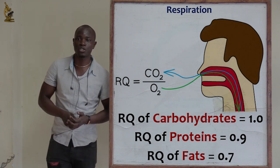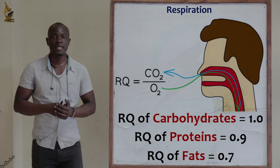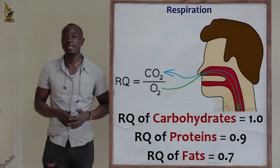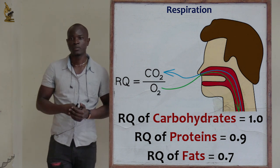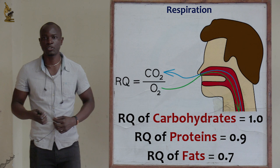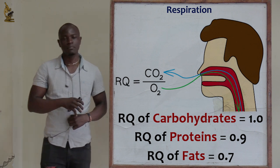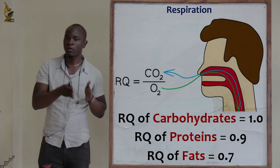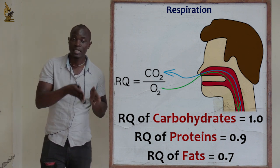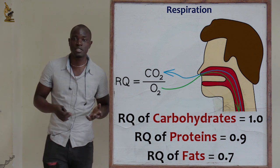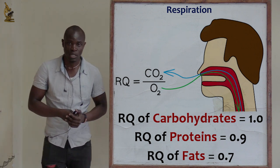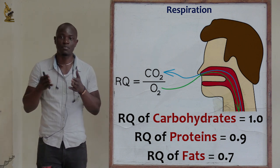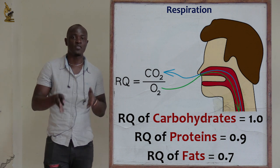Respiratory quotient values above 1 indicate anaerobic respiration. This is because in anaerobic respiration, no oxygen is used up. If the RQ is more than 1, it indicates anaerobic respiration — no oxygen is being used, so carbon dioxide is the only gas involved in this type of respiration.